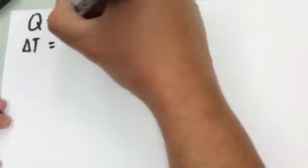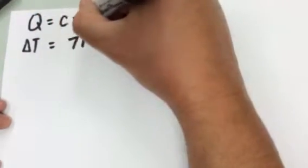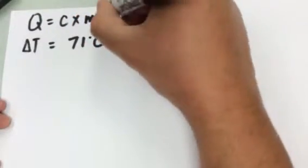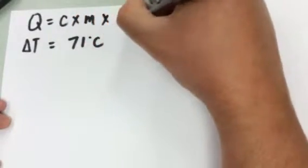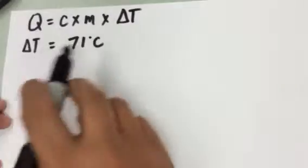We want to find out how much energy was released by that almond. So we've got to use our specific heat equation. Q equals C times M times delta T. And of course delta T was our change in temperature.